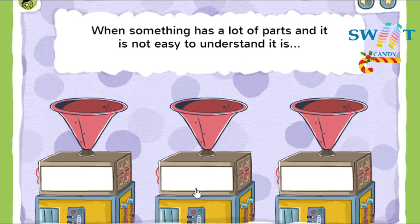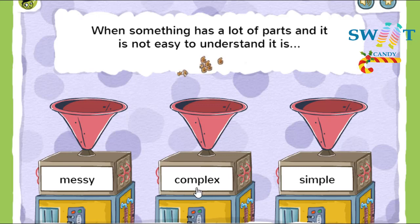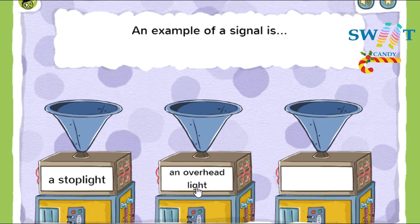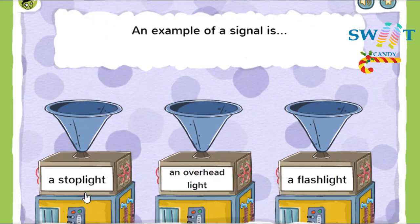When something has a lot of parts and is not easy to understand, it is complex. When something is complex, that means it has a lot of parts and is not easy to understand. An example of a signal is a stoplight. A signal is something that tells you what to do, gives directions, a warning, or other information.